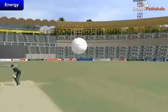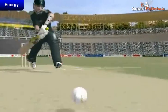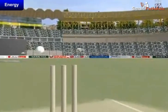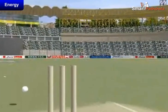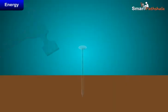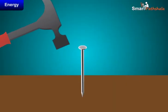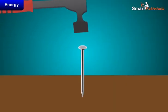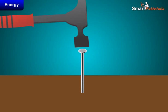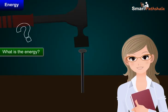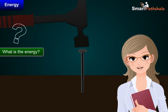Similarly, when a fast-moving cricket ball hits a stationary wicket, the wicket is thrown away. When a raised hammer falls on a nail placed on a piece of wood, it drives the nail into the wood. In all the above examples, we need energy to do work. Now a question will come in your mind: what is energy?